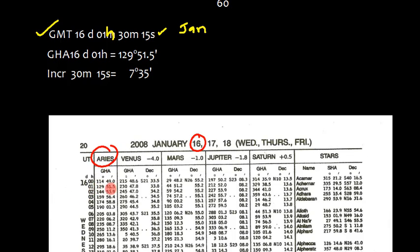16 and 01 we have this value which is 129 degrees 51.5 minutes. Now we look for the increment. We can compute the increment with this formula which says 15 degrees 02.46 minutes into time into decimal.